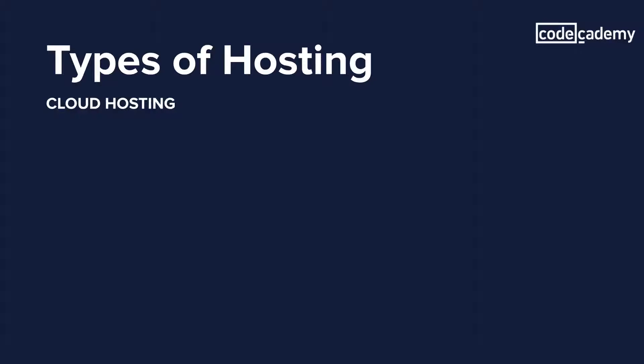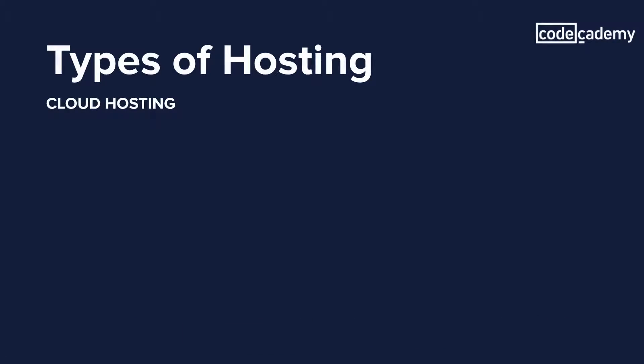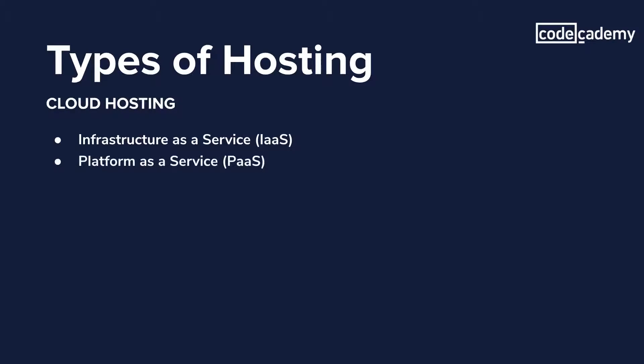Next up, we have cloud hosting. This is when you're running your app in the cloud. The cloud can be thought of as a vast network of data centers and different computing resources made available to consumers. This type of hosting is best suited for when you want to run different parts of your application on different types of machines — because you need to scale out, or because different parts require different kinds of resources. One part might be very CPU hungry while another part might be very memory hungry. Cloud hosting comes in different flavors: infrastructure as a service, platform as a service, and in recent years, functions as a service.